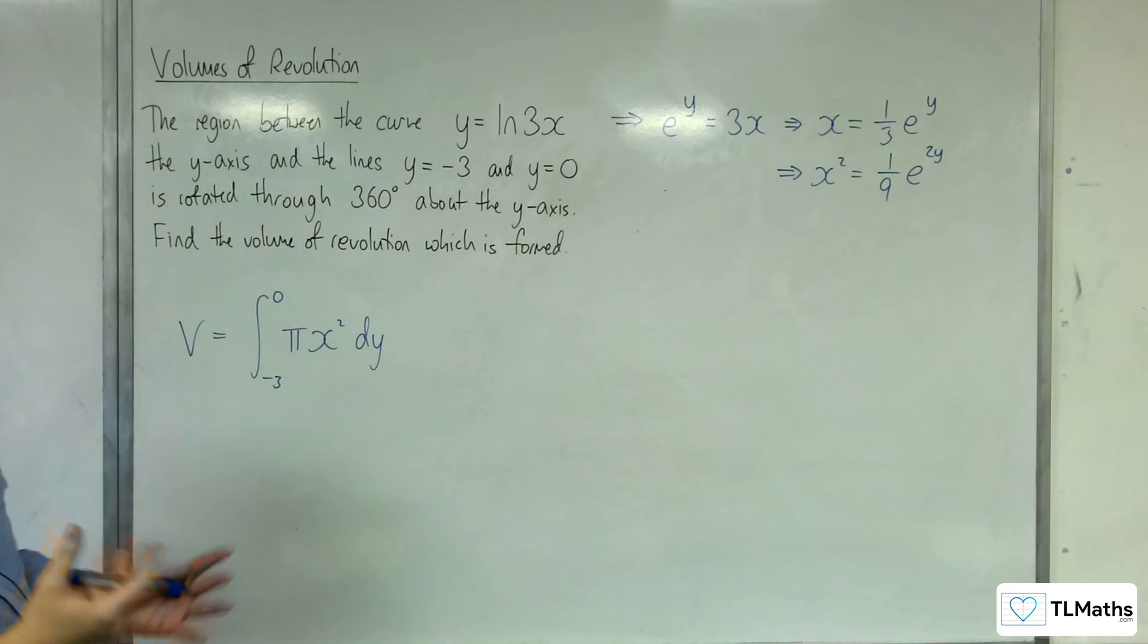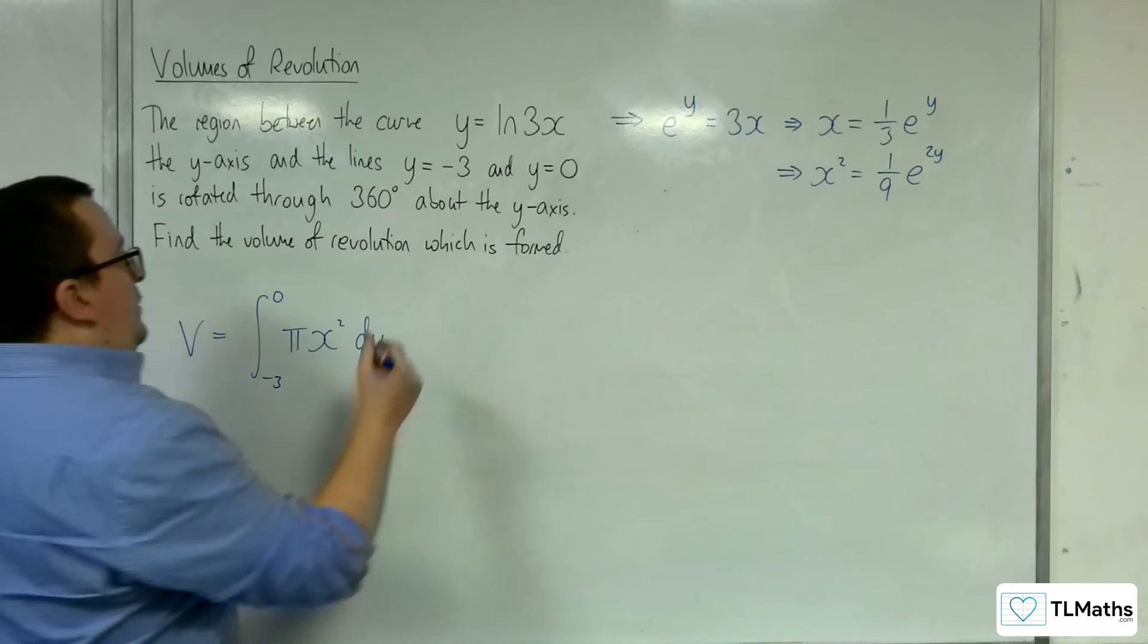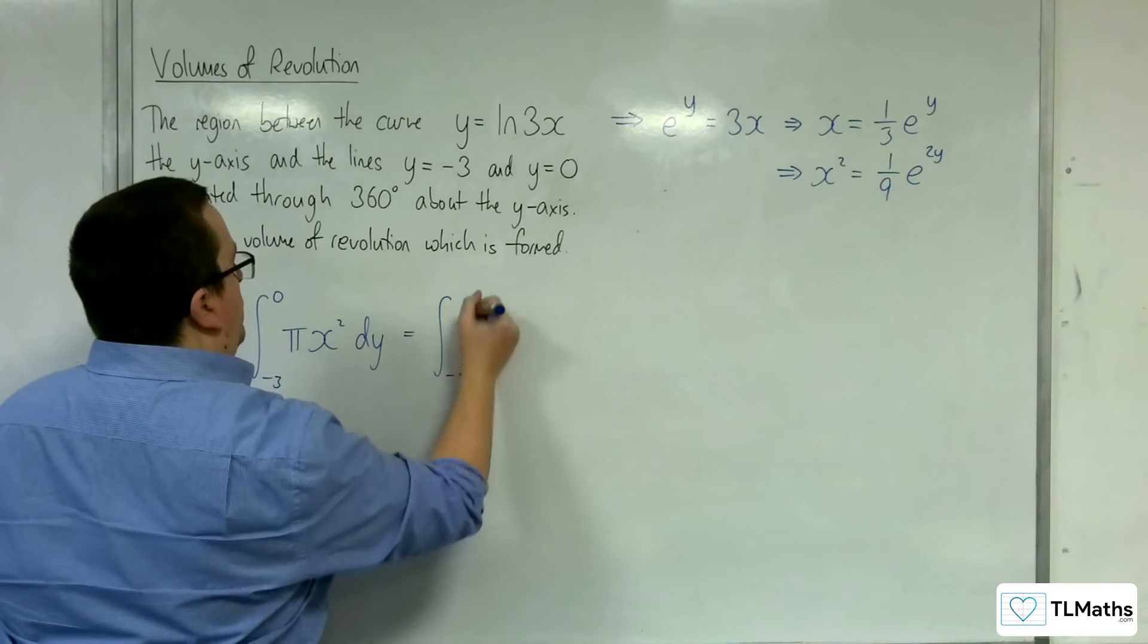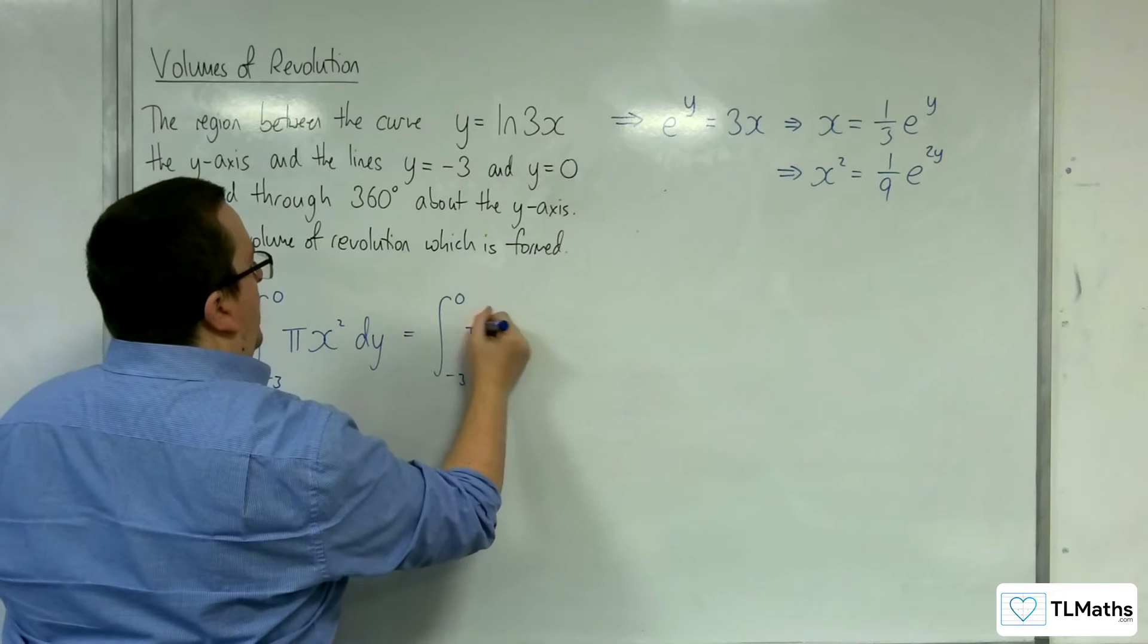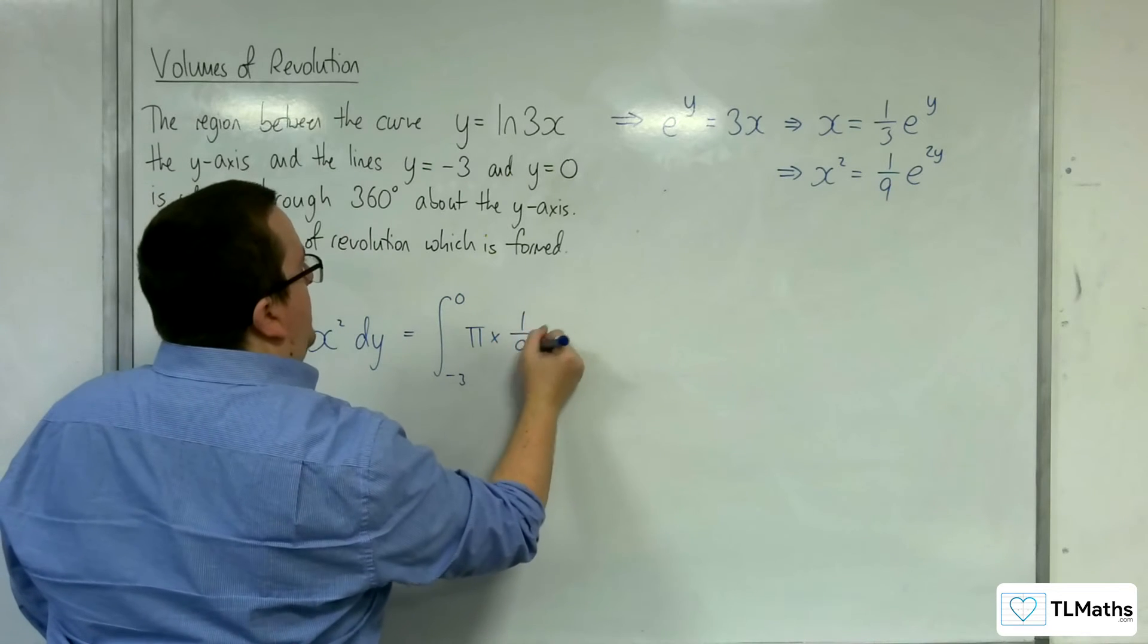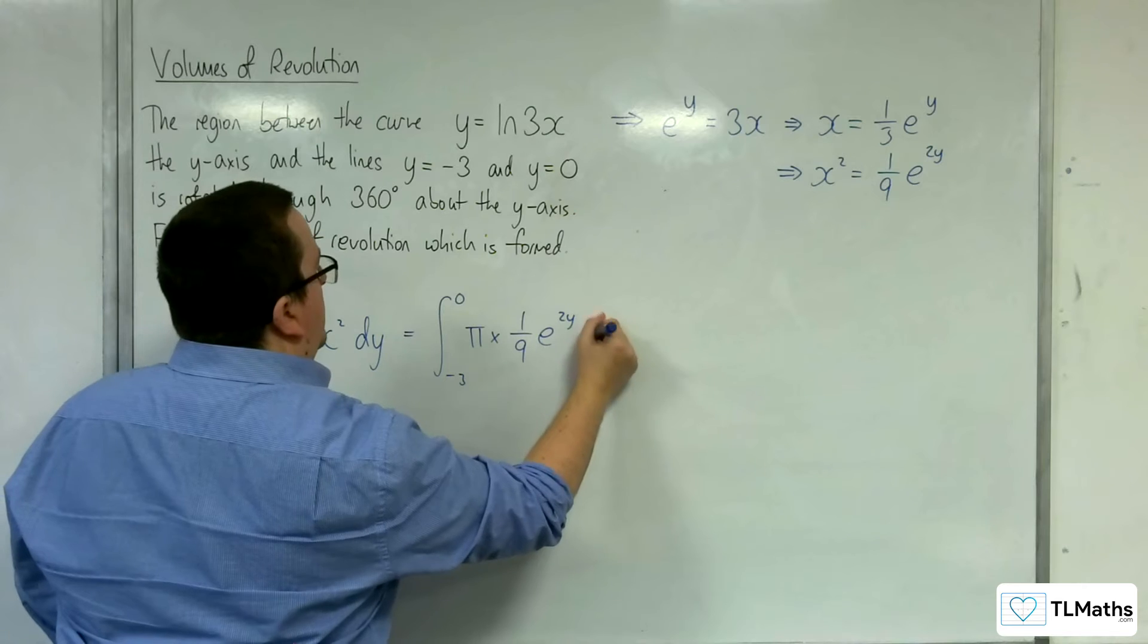Okay, so squaring both sides. So this is going to be equal to the integral between minus 3 and 0 of pi times 1 ninth e to the 2y dy.